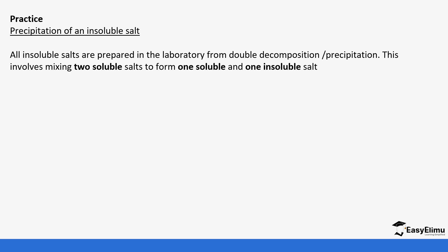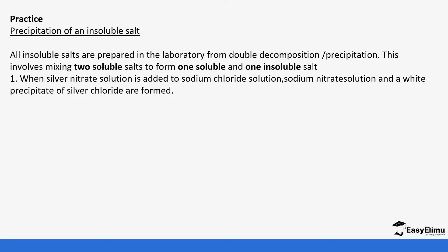Let's do a few examples. Ionic equations can be formed in the preparation of insoluble salts. All insoluble salts are prepared by reacting two soluble salts — when you mix two soluble salts you form one soluble and one insoluble salt, and the insoluble salt is a precipitate. An example is when silver nitrate solution is added to sodium chloride solution: sodium nitrate is formed and a white precipitate of silver chloride is formed. The first step is to write a complete balanced equation with correct state symbols, starting with silver nitrate reacting with sodium chloride.